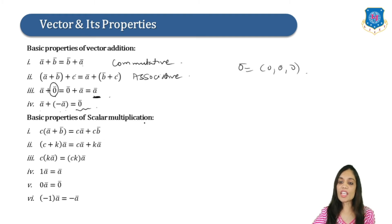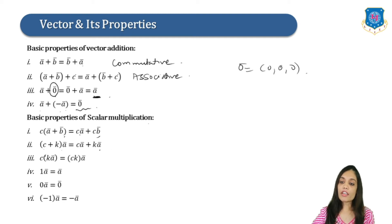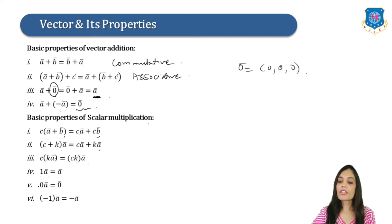The basic properties of scalar multiplication are: C(A bar + B bar) = CA bar + CB bar; (C + K)A bar = CA bar + KA bar; C(KA bar) = (CK)A bar. Also, 1·A bar = A bar (multiplicative identity); 0·A bar = 0 bar; and (−1)·A bar = −A bar.